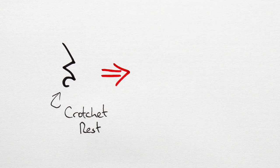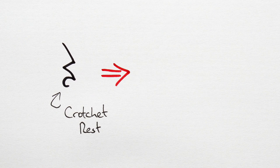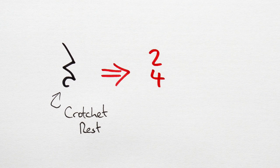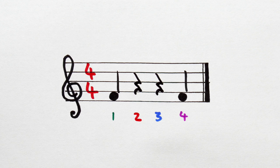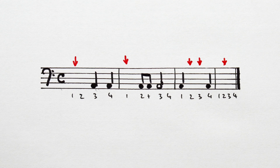As for the crotchet rest, it's used for all single beats of silence in 2-4, 3-4 and 4-4. And of course, where we can't use minim rests. Got it? Cool!